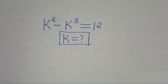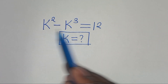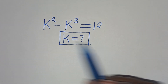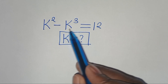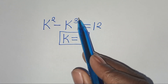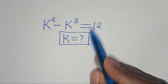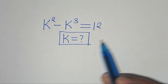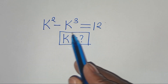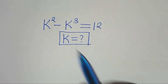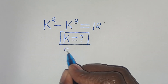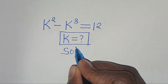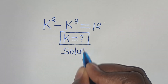Hello everyone, welcome to solve this nice algebra problem: k squared minus k to the power of 3 equals 12. What are the values of k? Let's provide a solution.